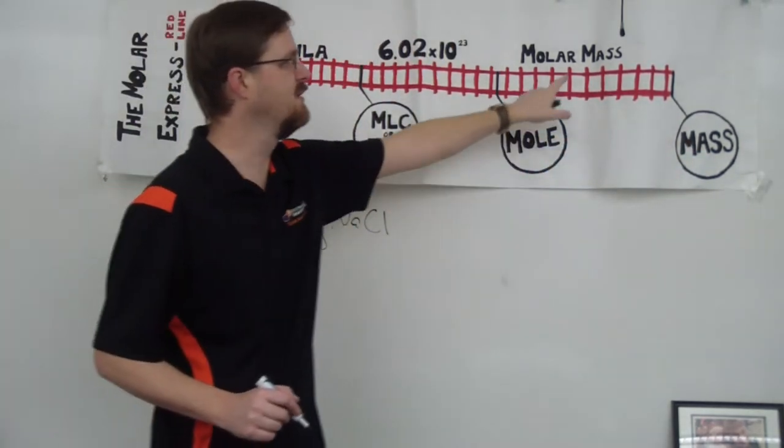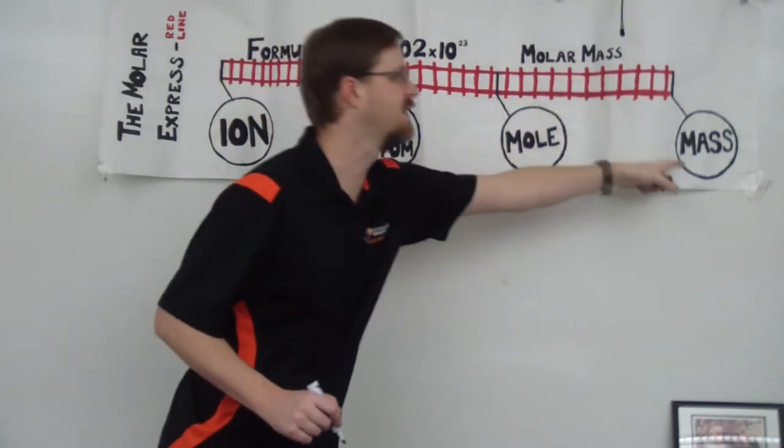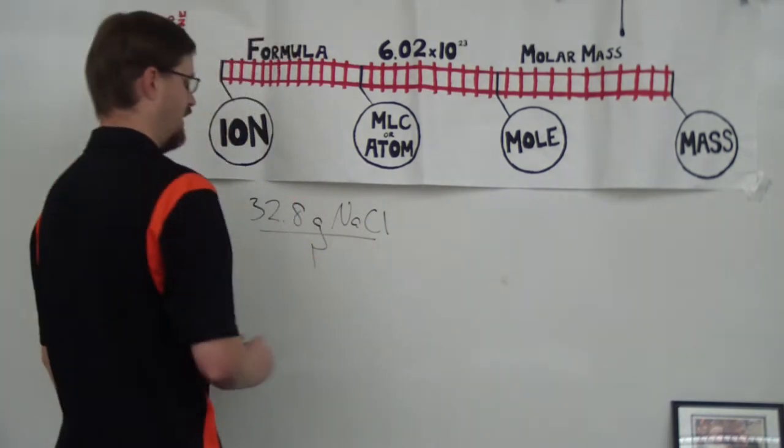let's just say you're given 32.8 grams of sodium chloride, and I want to know how many moles that is. Alright, so we're starting here at grams. We're going to move on over to moles using the molar mass. And you can see that this is a one-step process. Alright, so here we go. Put that over one, multiply it by.